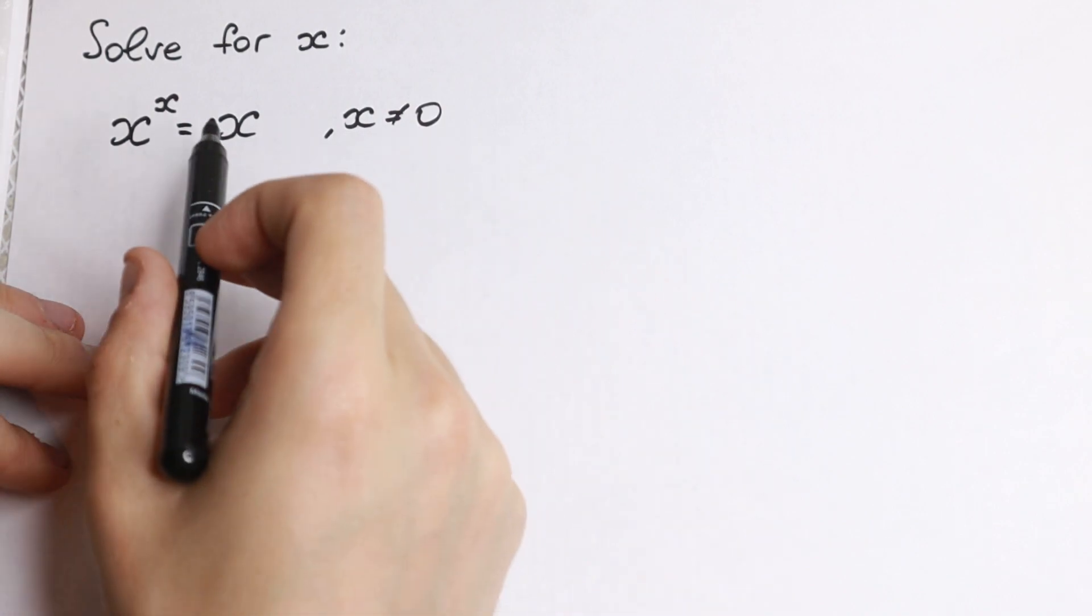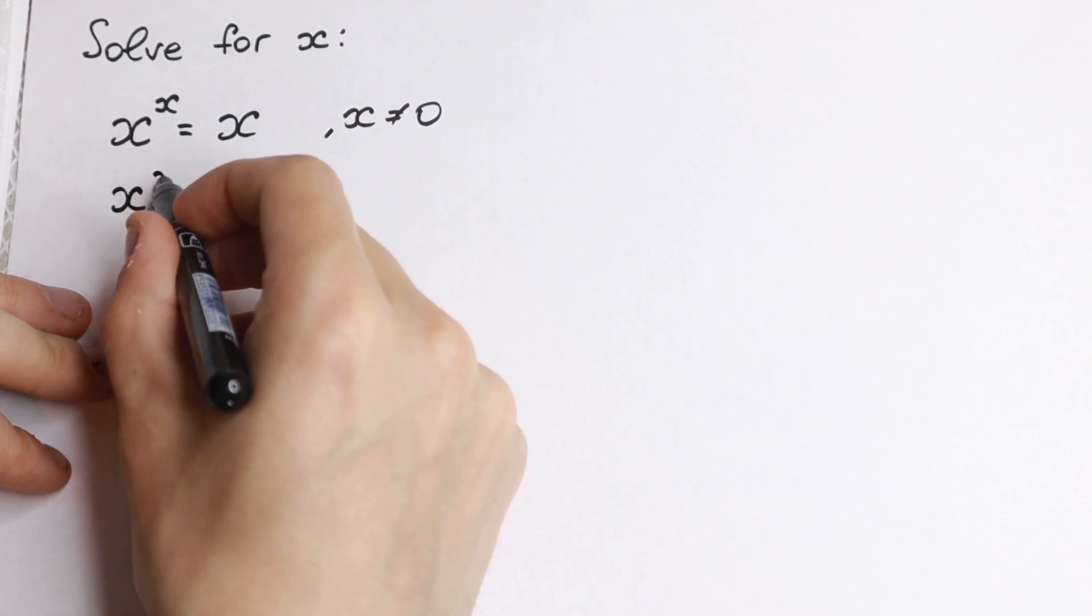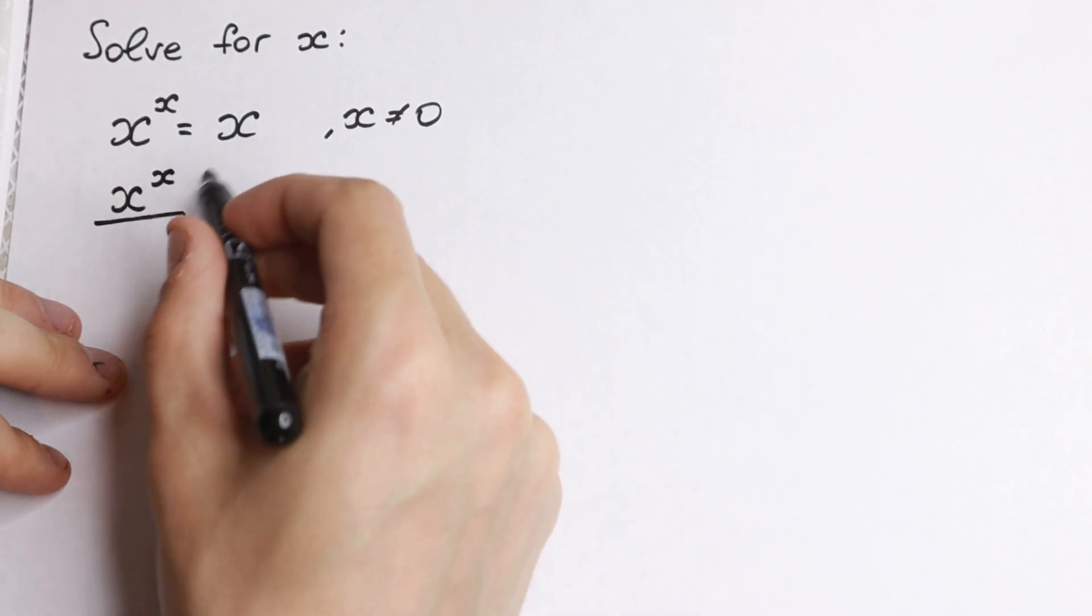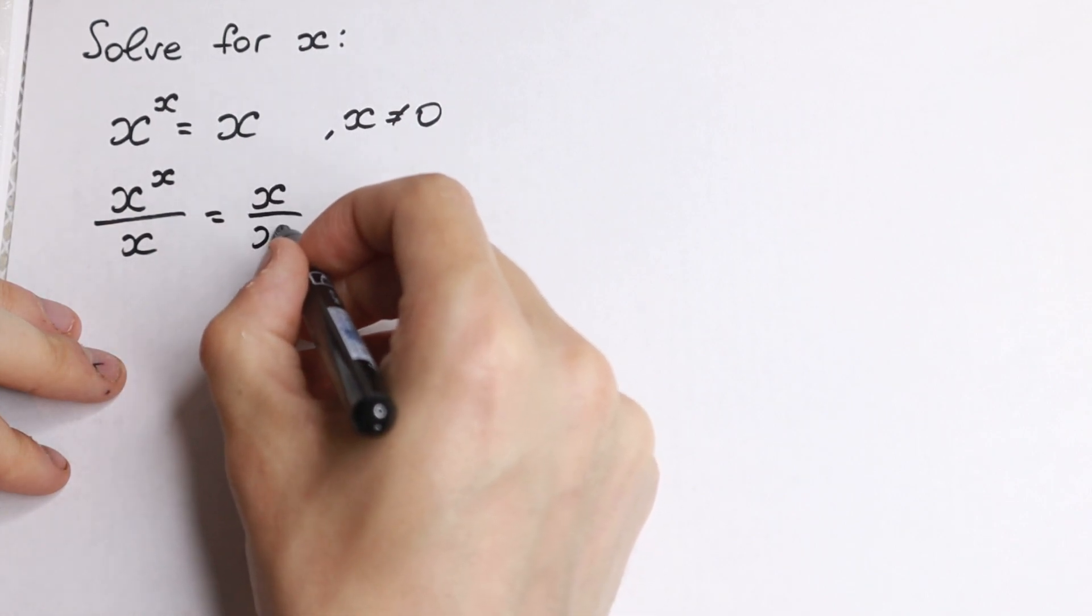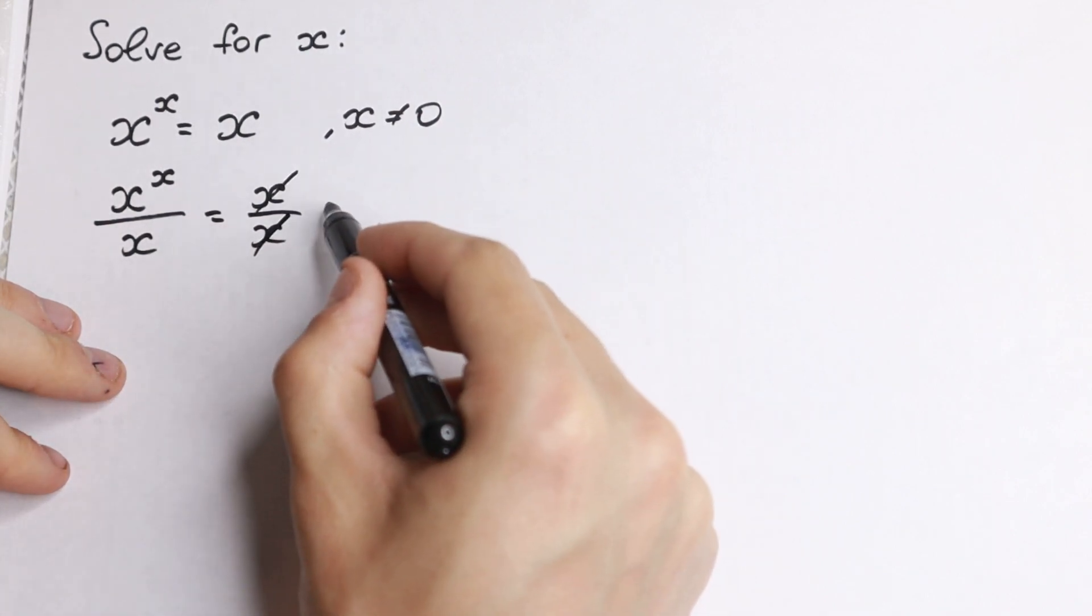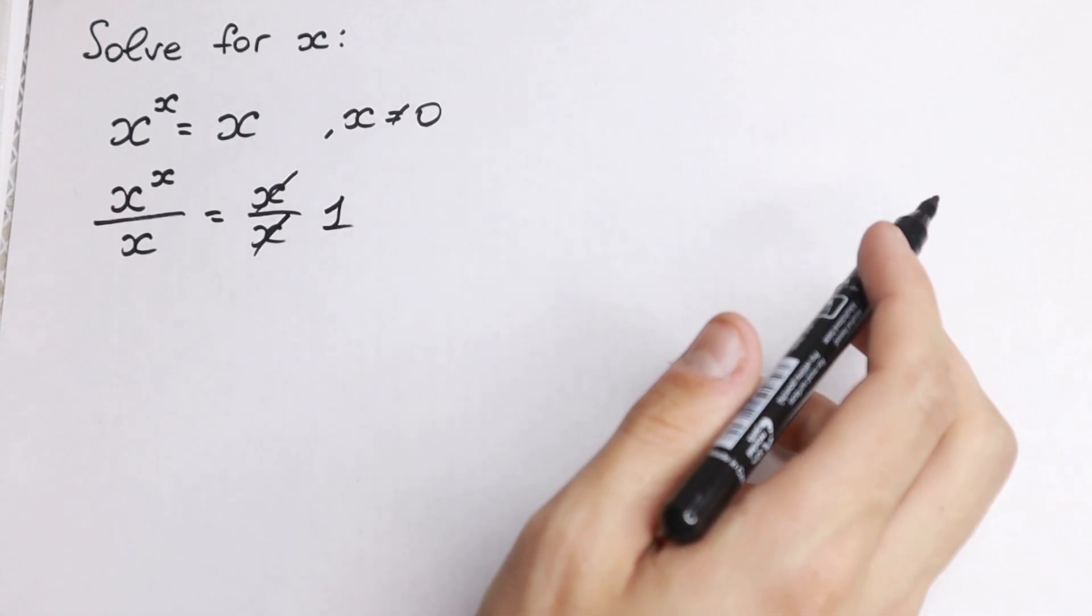Of course let's divide both sides by this x. What we'll have? We'll have x to the power x and we divide by this x. x equal to x over x. Of course if we cancel it we'll have 1 on the right hand side. So it's good for us.